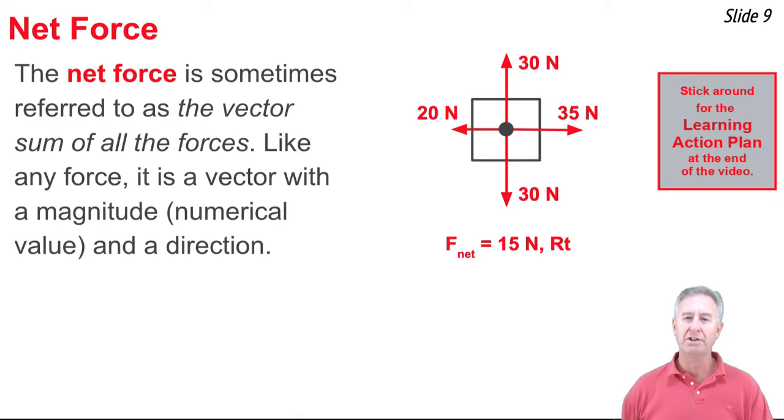Like any force, it's going to have a magnitude, and it's going to have a direction. So when we look at this diagram, if we were to compute the net force, we'd notice that the 30 newtons up and 30 newtons down balance each other out, but there's no balance in the horizontal direction. There's 35 newtons to the right and 20 newtons to the left. So overall, there's a net force of 15 newtons directed rightwards.